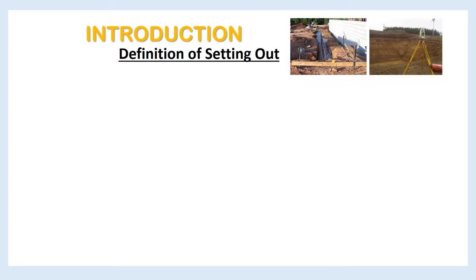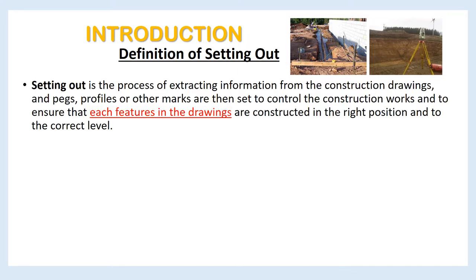What is Setting Out? Setting Out is the process of extracting information from the construction drawings, and pegs, profiles or other marks are then set to control the construction works and to ensure that each feature in the drawings is constructed in the right position and to the correct level. Each feature in the drawings includes building corners, sewers, earthworks, roadworks, steel structures, or line works.